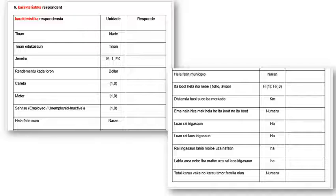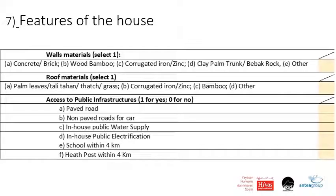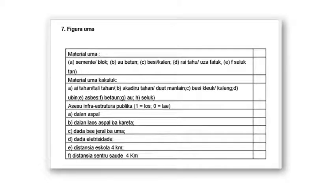Some characteristics of the respondent's house. Question seven concerns the features of the house the interviewee lives in. You ask precisely about wall materials: option A is concrete brick; option B is wood or bamboo; option C is corrugated iron or zinc; option D is clay, palm, trunk, or bare rock; and option E is any other material not listed.